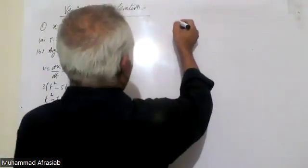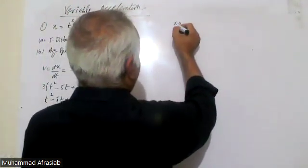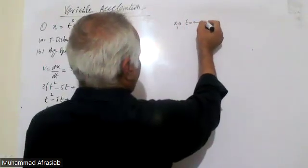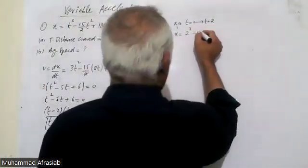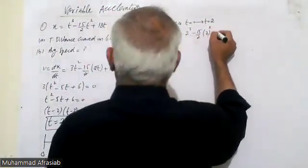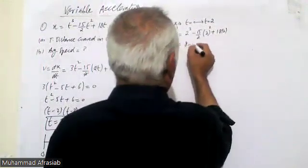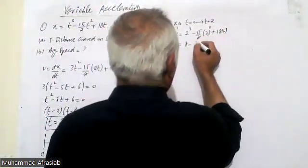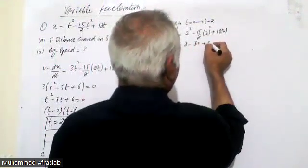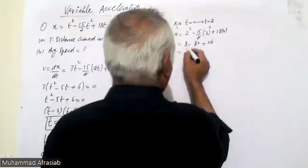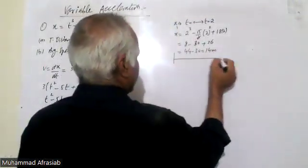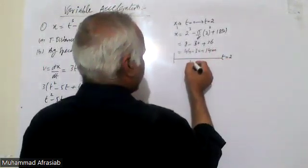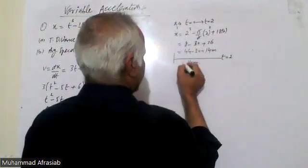For x1, from t = 0 to t = 2 seconds: x = 2³ − (15/2)·2² + 18·2 = 8 − 30 + 36 = 14 meters. So the particle has covered 14 meters at t = 2 seconds. This is x1.